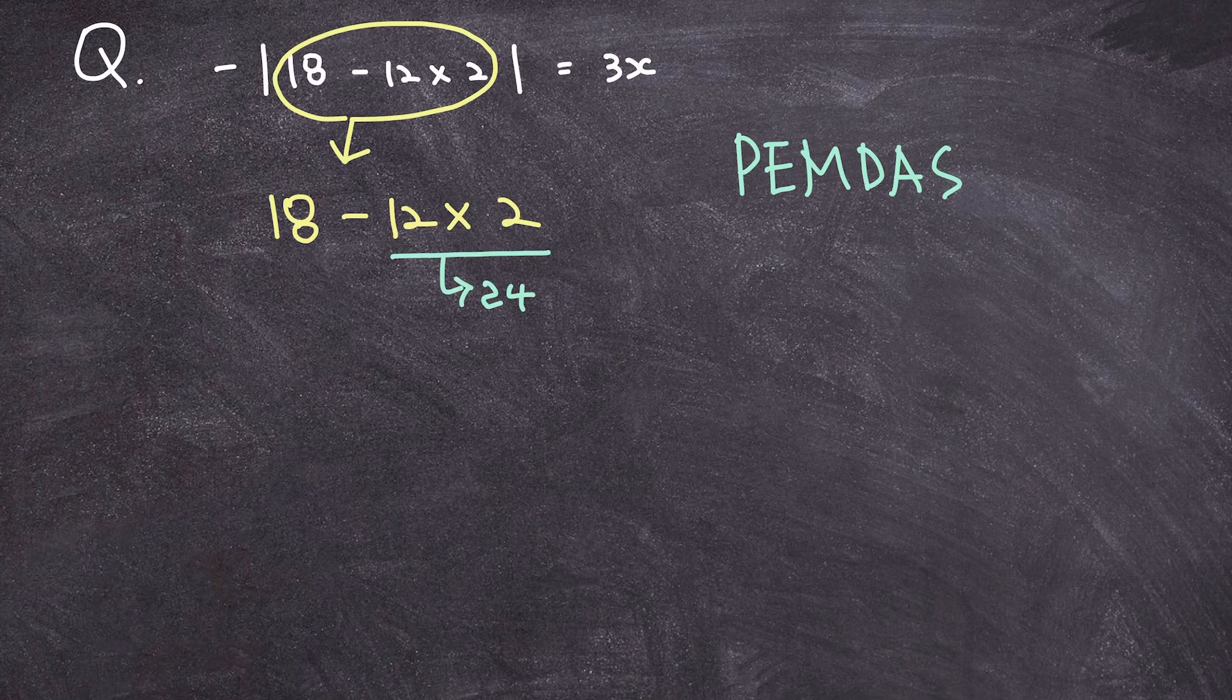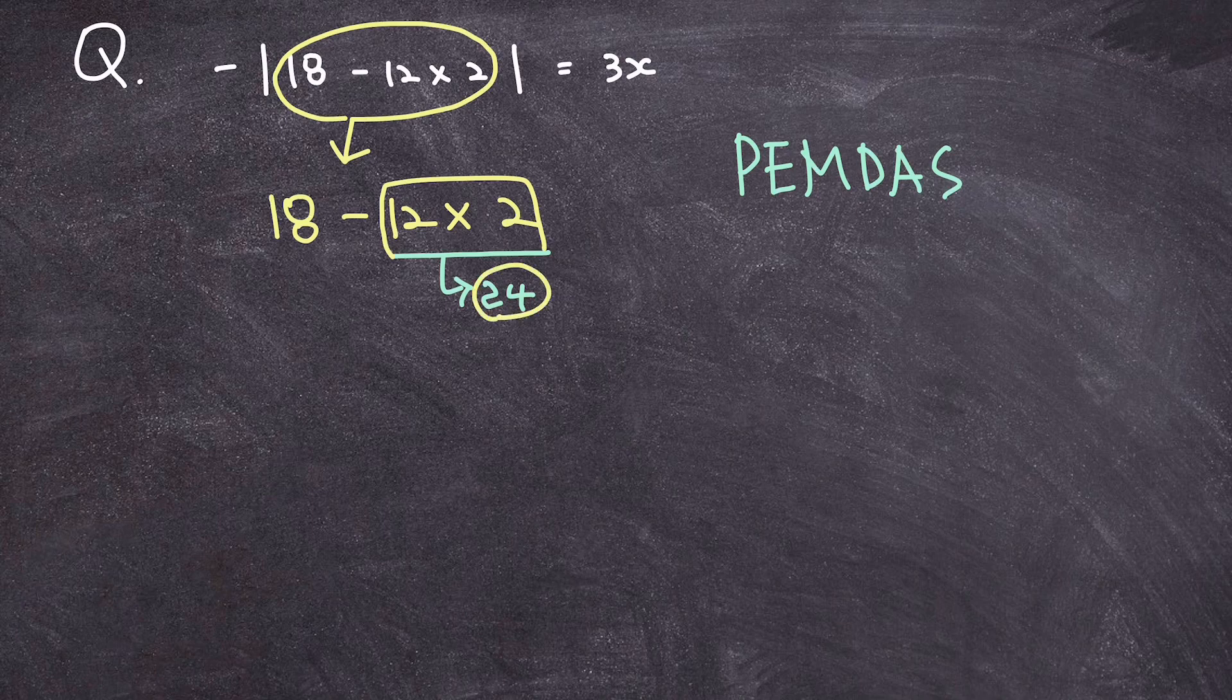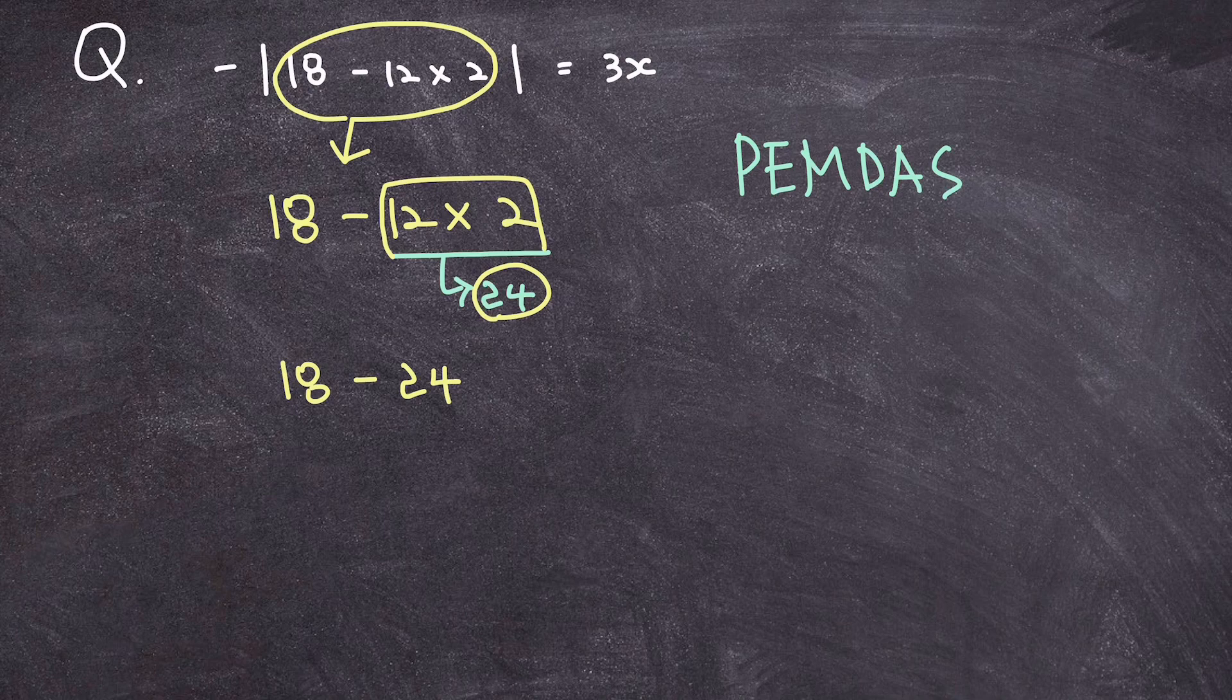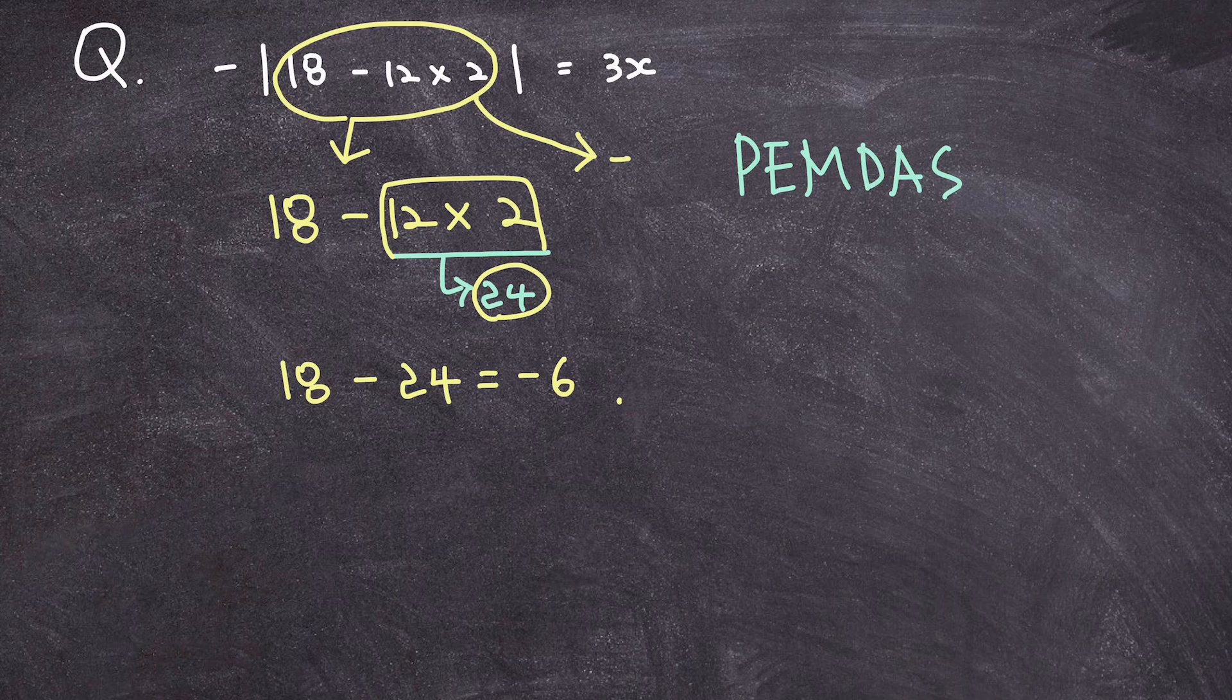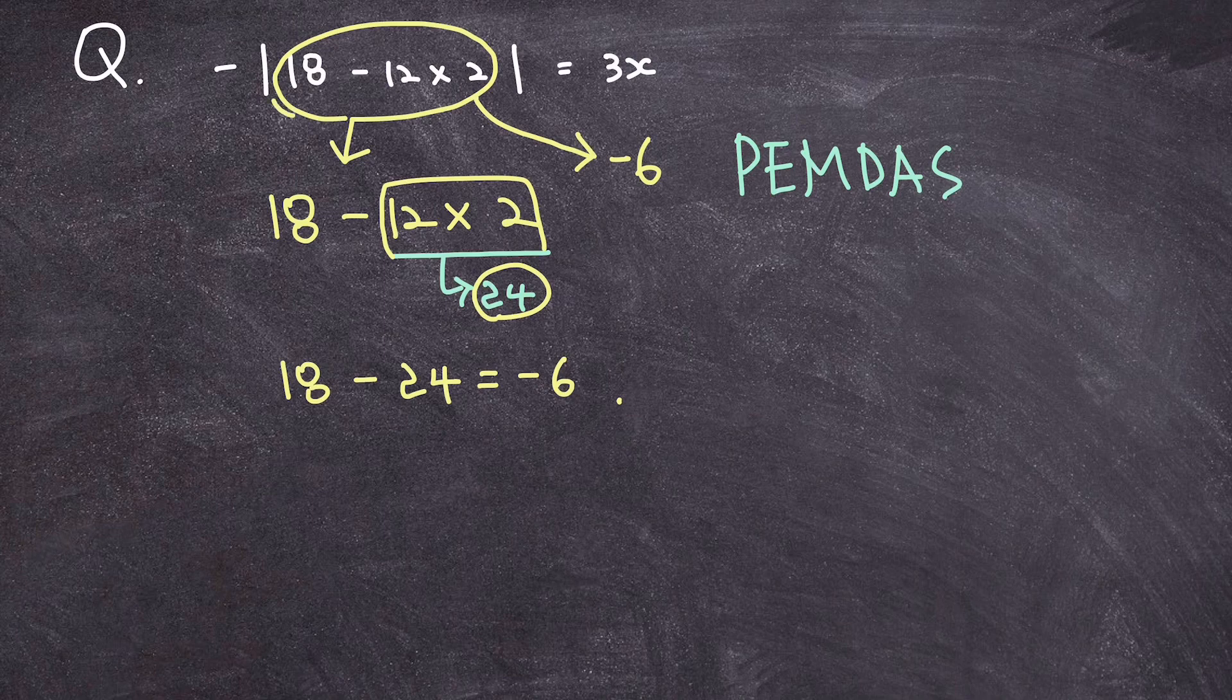So if I were to rewrite it, I can replace 12 times 2 with 24, so I have 18 minus 24, and that's equal to negative 6. Meaning, I can replace this expression with negative 6, and put that inside the absolute value bracket instead of these numbers here. So let's go ahead and do that.